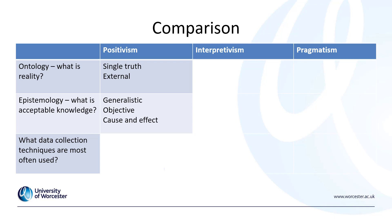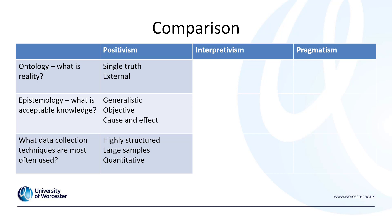Positivism believes that good knowledge is objective, and therefore we're looking for cause and effects. This leads us to data collection techniques which are highly structured, use large samples, and are normally quantitative. This highly structured large sample allows us to try and generalize about a single truth, and quantitative data is normally seen as more objective — it can only be interpreted in one way, making it an objective interpretation.